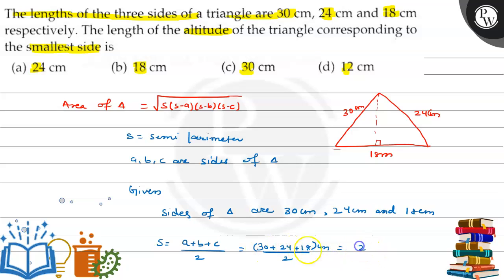Adding: 30+24+18 = 72. So 72/2 = 36 cm. Therefore, the semi-perimeter is 36 cm.